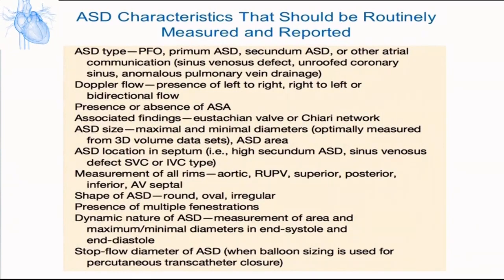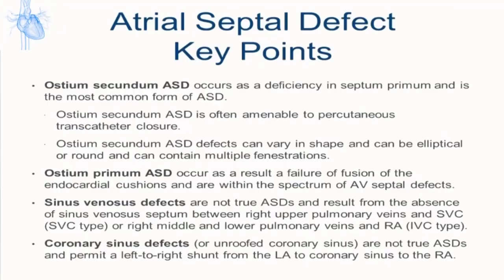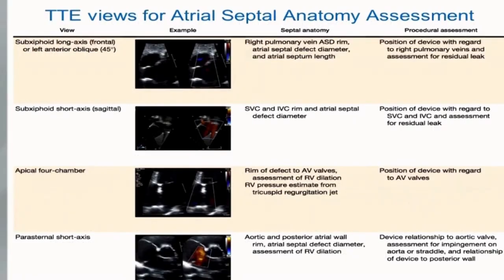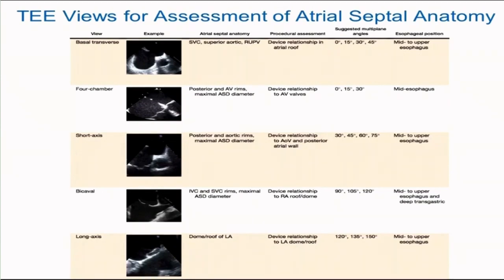ASD characteristics that should be routinely measured and reported include: ASD type, flow direction, presence or absence of atrial septal aneurysm, associated findings, ASD size — maximum and minimum. The 5 basic TEE views for assessment of septal anatomy use angulation between 0 and 135 degrees: basal transverse view, 4-chamber view, short axis view, bicaval view, and long axis view. Probe position should be mid to upper esophagus.